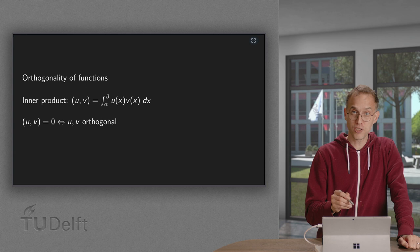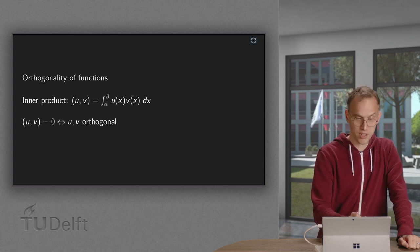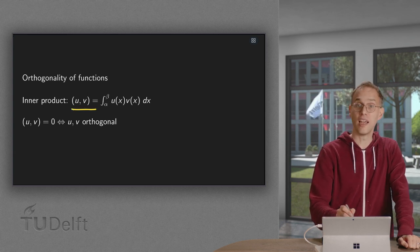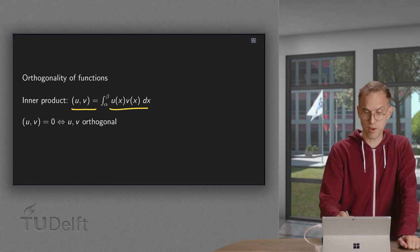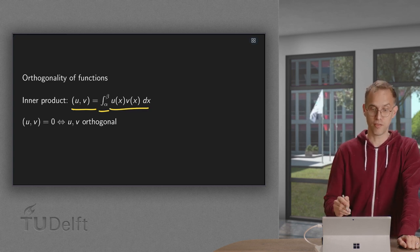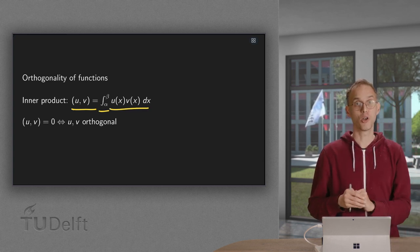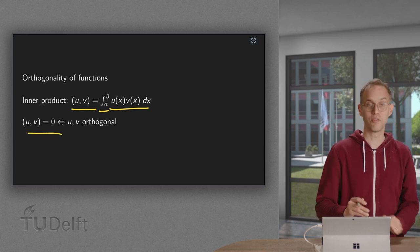For functions u and v, define the following inner product. If functions u and v, then the inner product multiply u and v and integrate from alpha to beta. And we call functions orthogonal if this inner product equals zero.